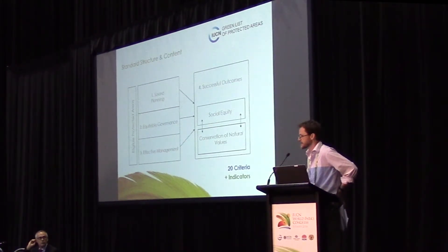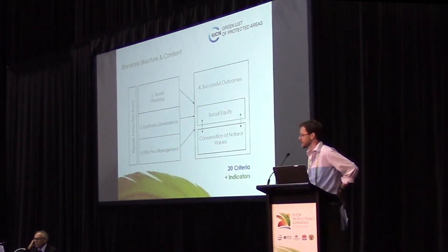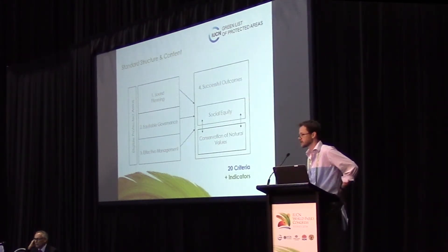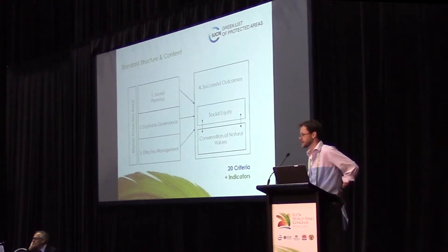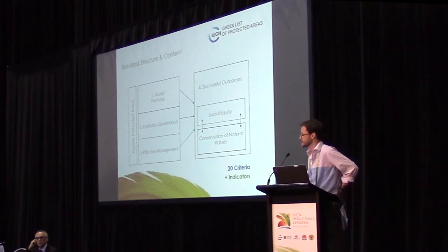That's the high-level structure and content of the standard. Those four pillars are then divided into 20 criteria, and each criterion is divided into two, three, or four indicators. It's a hierarchical structure designed so that what you actually measure are the indicators. If the indicators are met for a particular criterion, then the criterion is met. And if the criteria are met, then the pillars are deemed to be met.